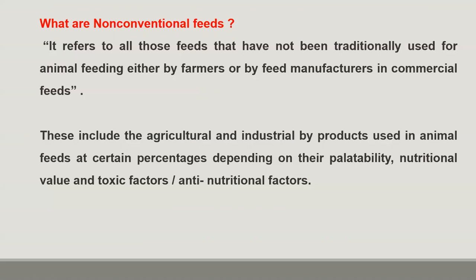Non-conventional feed resources are those feeds that have not been traditionally used. These are not conventional forms of feed resources and traditionally not under practice for feeding animals. Those feeds which have not been traditionally used for animal feeding, either by farmers or any feed manufacturers in commercial settings, are coming under the unconventional feed resources category.